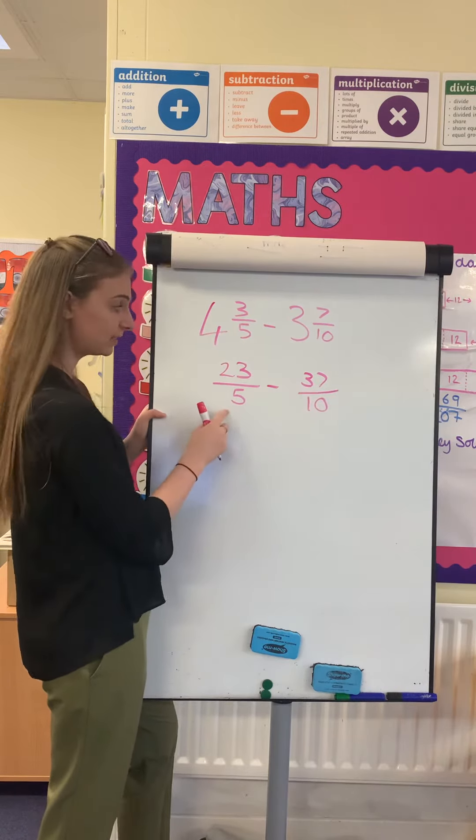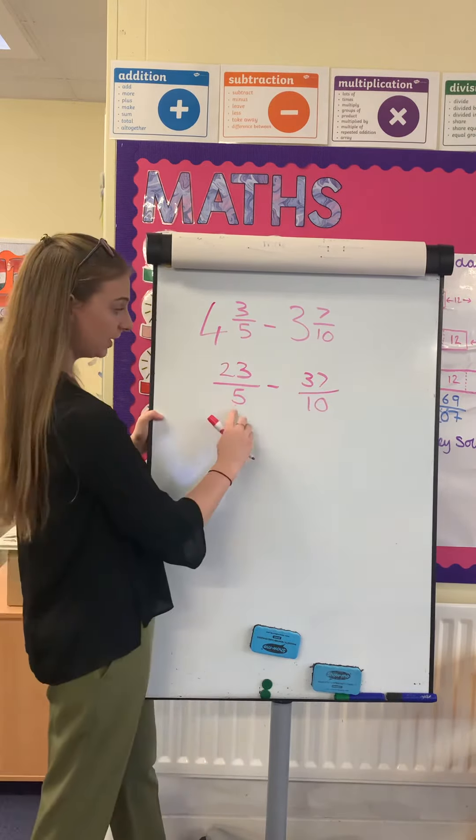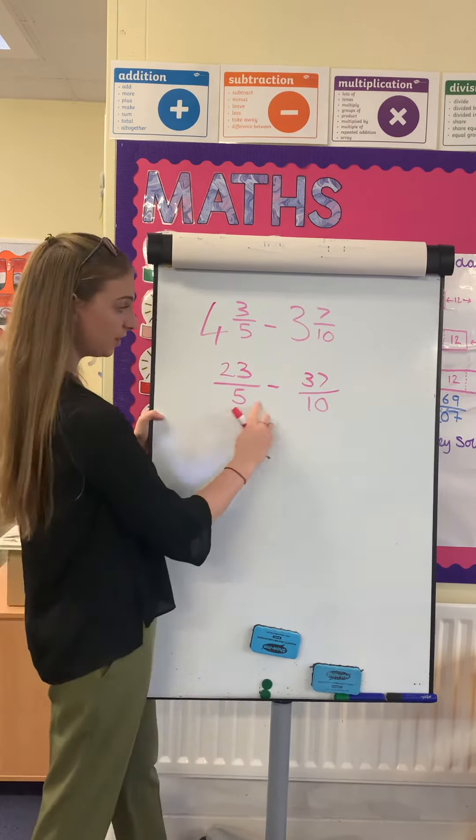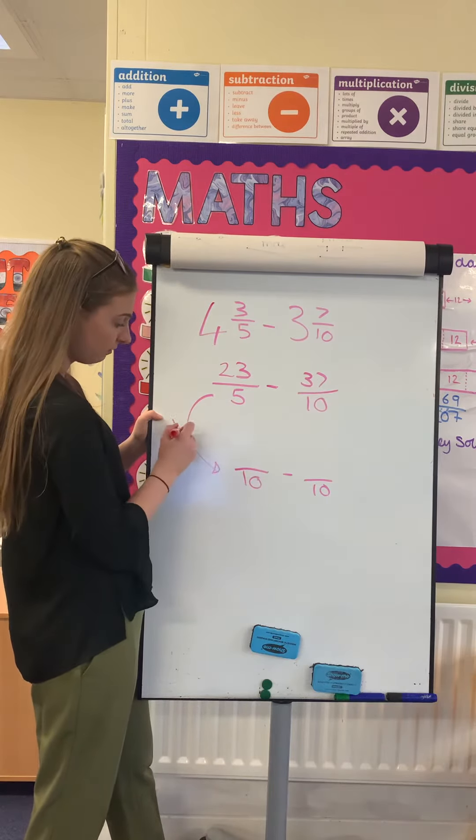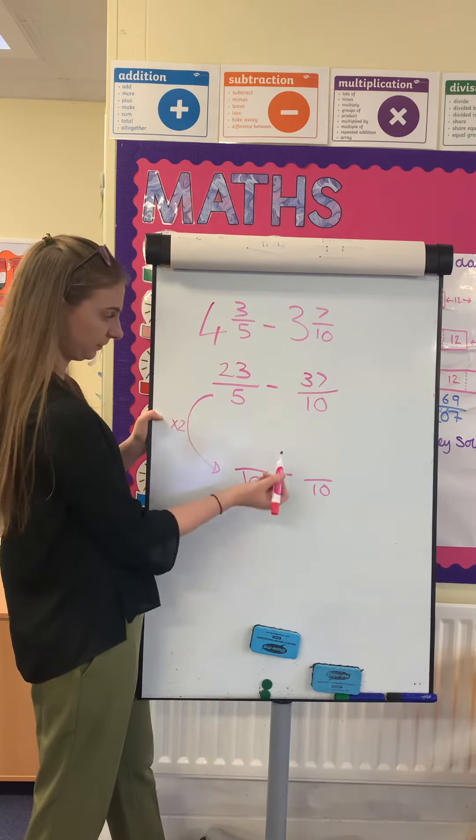Then I can subtract these, but I need to find a common denominator first. I know that 10 is my common denominator here, because 10 is in the 10 times table and 10 is in the 5 times table. So 5 times 2 gives me 10, so 23 times 2 is 46. These ones stay the same, so it's 37. So 46 take away 37 is 9 over 10.